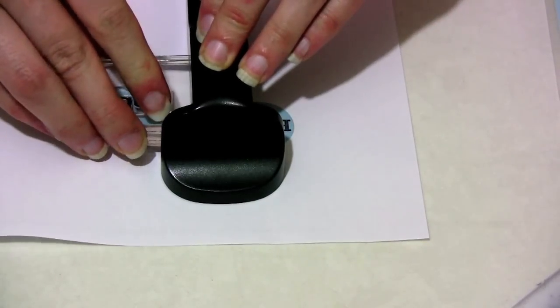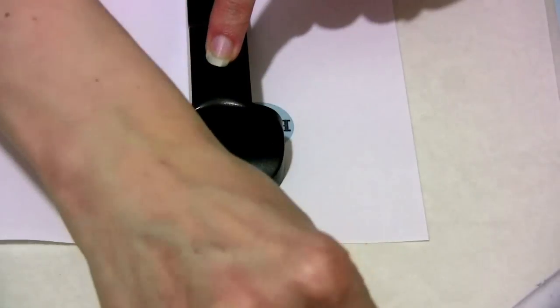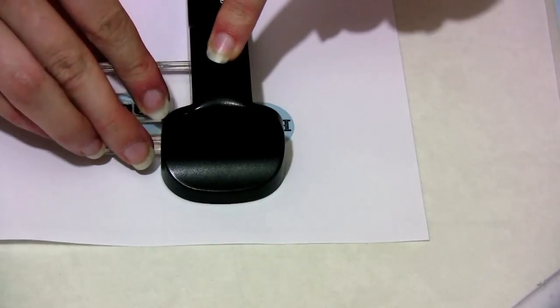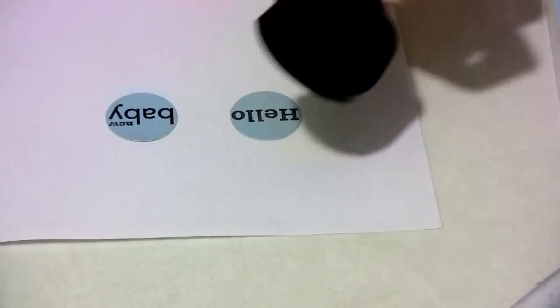It will be exactly where it was on the plasma. If you don't stamp it all the first time you can go straight back and stamp over the top of it and it will just be perfect.